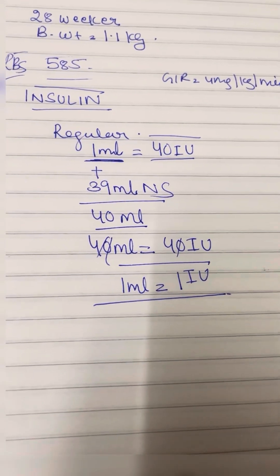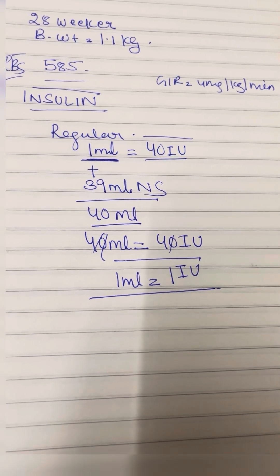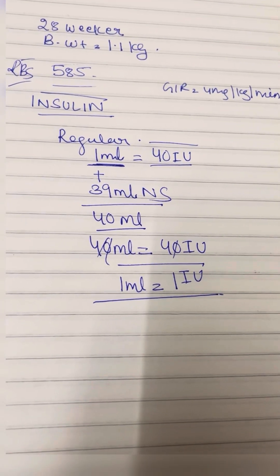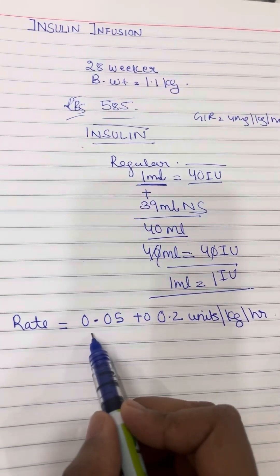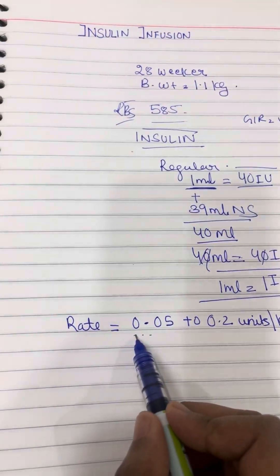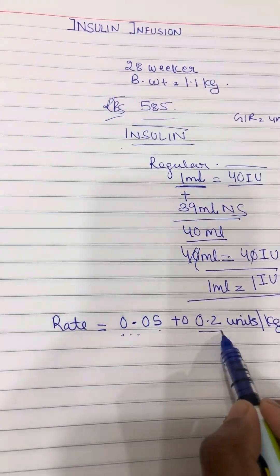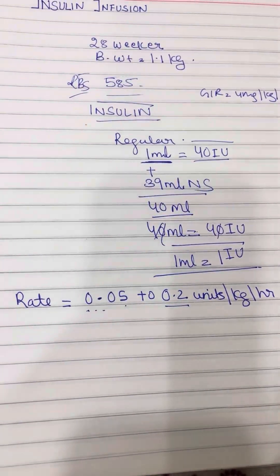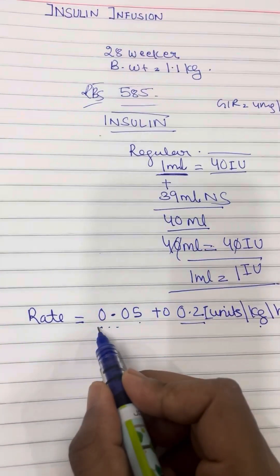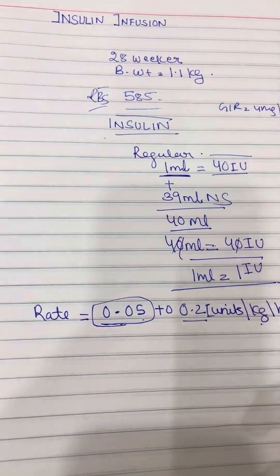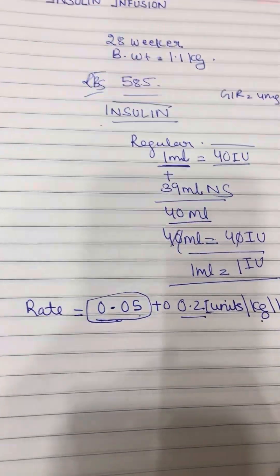Now let's see the rate you want to start with. The rate of starting insulin is 0.05 to 0.2 international units per kg per hour. We usually start with this dosing: 0.05 international units per kg per hour. Now I will calculate the total insulin that is required in a day.